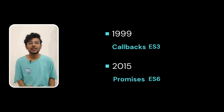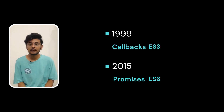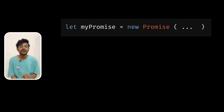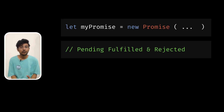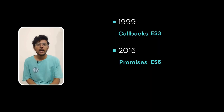To overcome this problem, promises were introduced in ECMAScript 6 in 2015. Don't worry about all these terms — we'll learn them in detail as we proceed. Promises provide a way to handle asynchronous code that is more readable and easier to use. A promise is created using the promise constructor and has three states: pending, fulfilled, or rejected. Once created, we use a chain of dot-then and dot-catch to handle fulfillment and rejection.